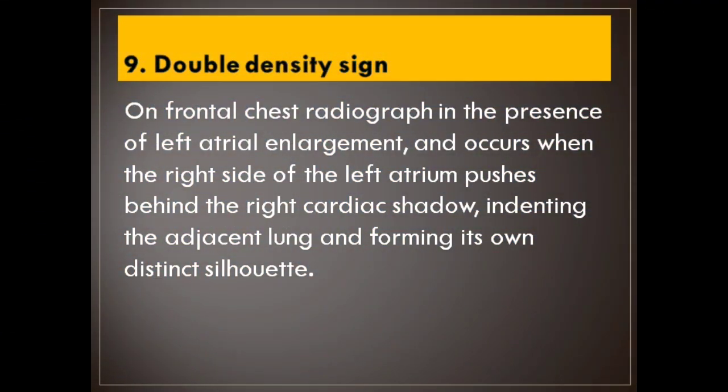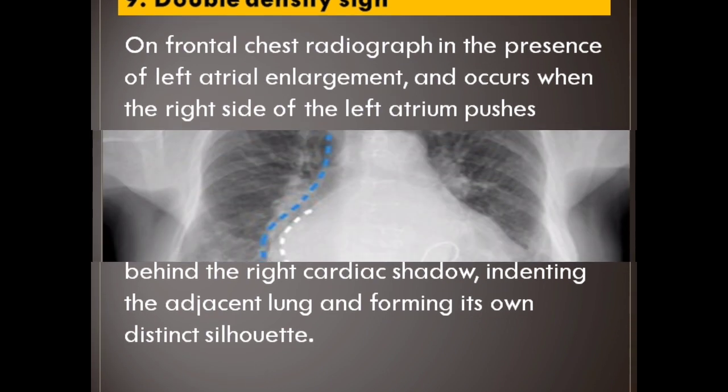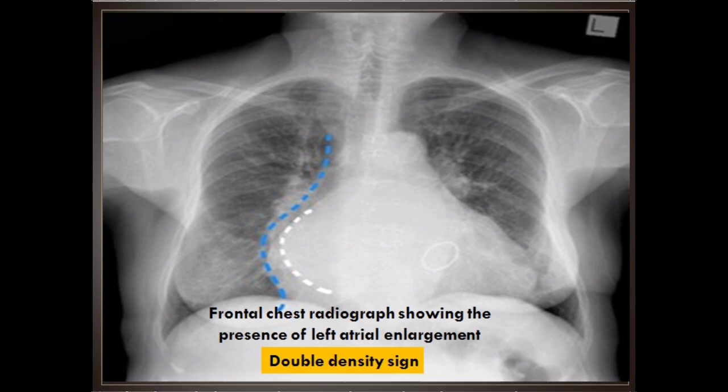Number 9: Double density sign. On a frontal chest radiograph, in the presence of left atrial enlargement, this occurs when the right side of the left atrium pushes behind the right cardiac shadow, indenting the adjacent lung and forming its own distinct silhouette.